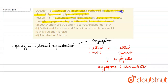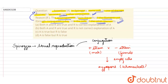In Spirogyra, some cells in one of the two filaments become empty after conjugation because of the transfer of nuclei, so the assertion is absolutely true. The reason — that aplanogametes pass through conjugation tubes into the cells of the other filament — is also true. The reason completely explains the assertion, as the empty cells are formed due to the transfer of nuclei through the conjugation tube formed between the two different strains.